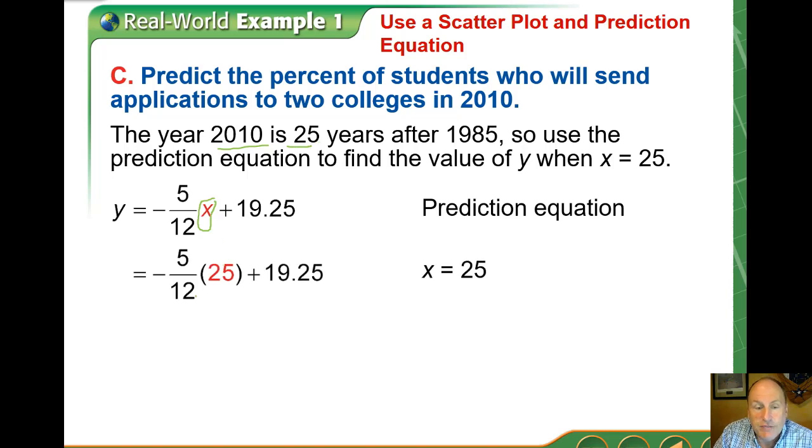Substitute that in for x. Negative 5/12 times 25 plus 19.25 gives us 8.83. That's a percent. We would predict using this model that in the year 2010, 8.83 percent of students would send applications to two colleges.